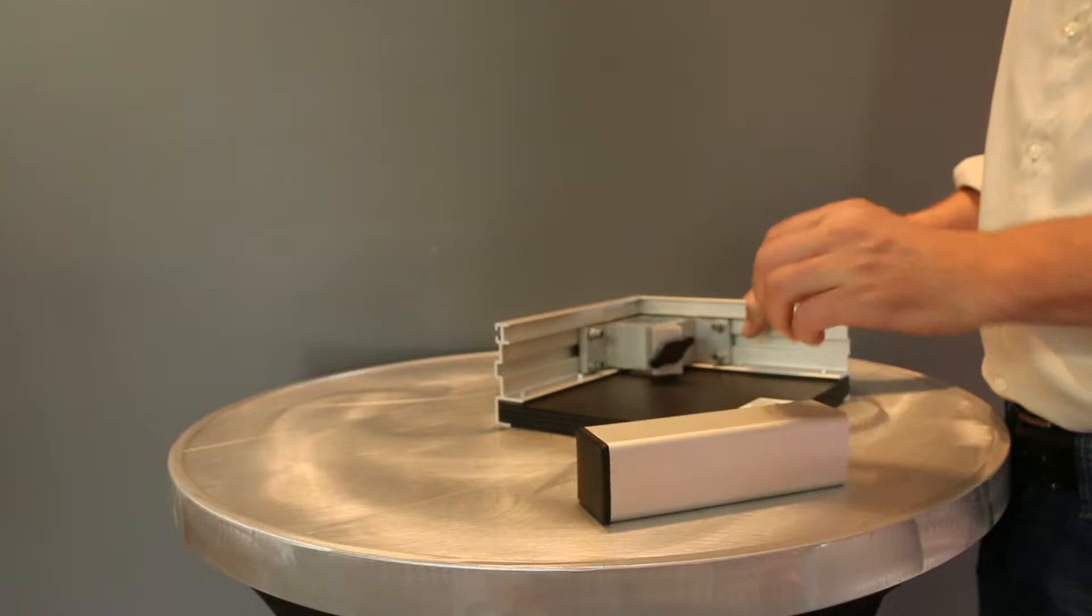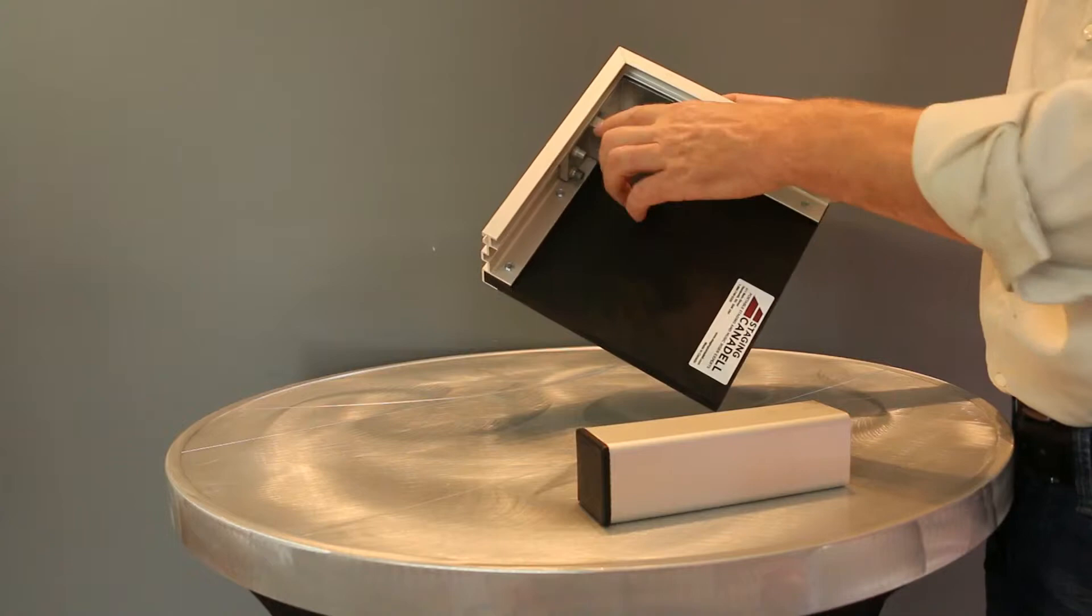This is a sample of a leg, 2 inch by 2 inch leg, and this is a corner sample of an executive platform. This is the underside of the stage showing you the corner clamp. This is the top of the platform right here.